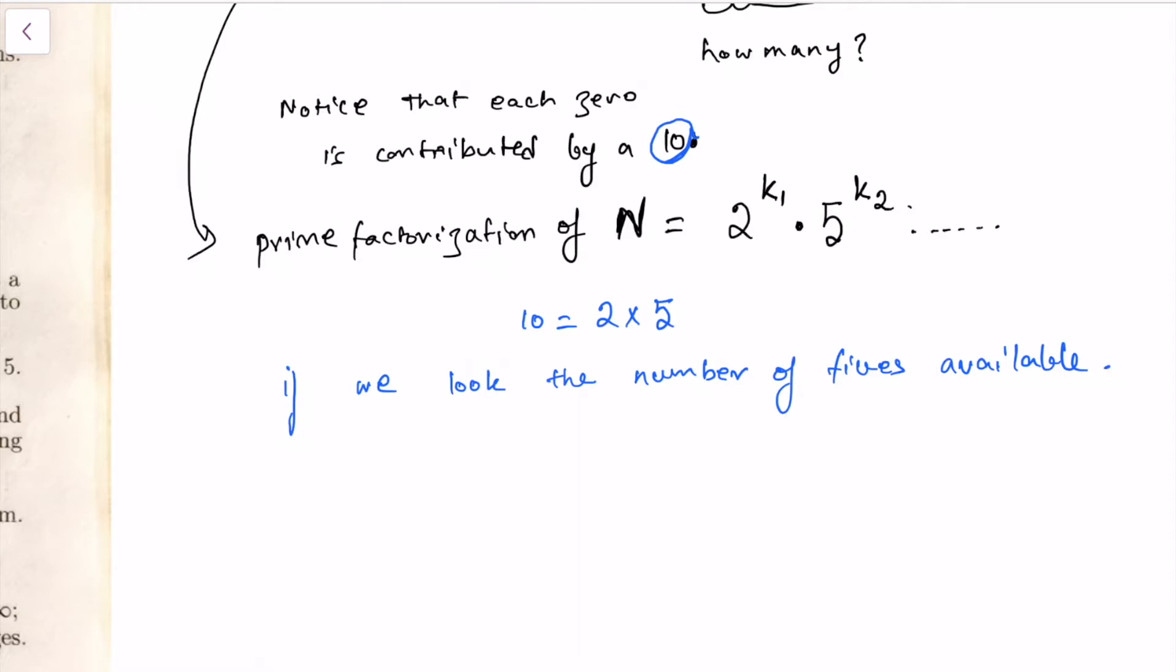So how many fives are available in this product? Of course every fifth number is divisible by five, so every fifth number gives a five. By this method we will get hundred by five, so twenty fives.